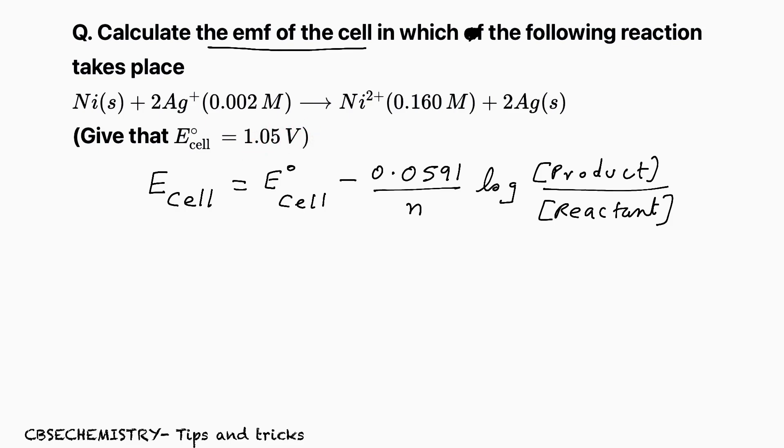Now, we are supposed to find N. For that purpose, take any of the half cell reaction. For example, nickel becomes Ni2+. How many electrons are lost by the nickel? Nickel by losing 2 electrons becomes Ni2+. So what is the number of electrons involved? It is 2. So we got N value.